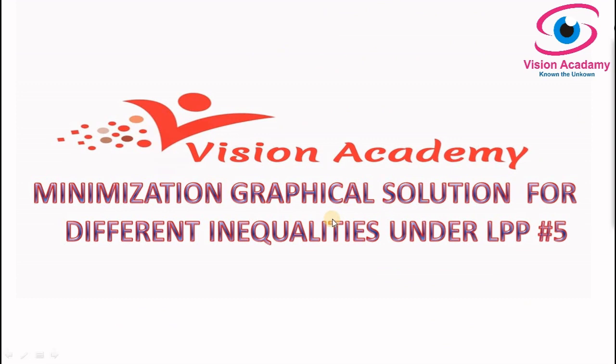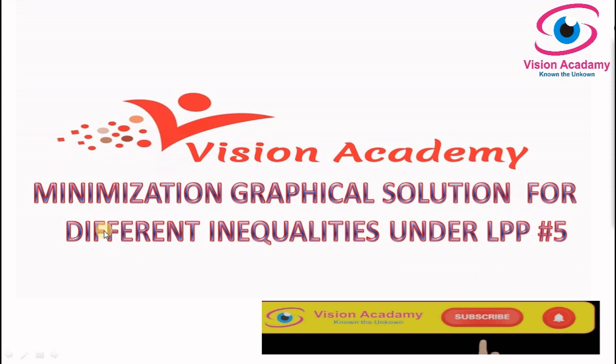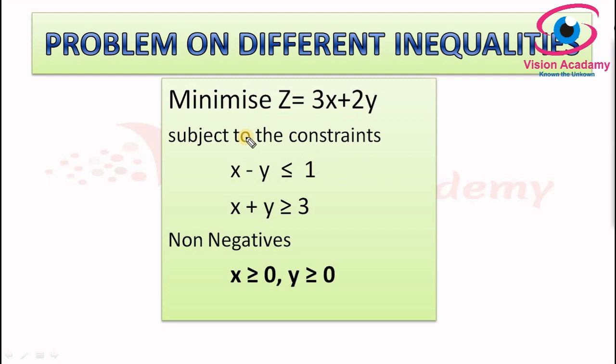In this lecture we will learn how to treat different inequalities in graphical solution — specifically a minimization type of graphical solution of a linear programming problem. We have directly taken a minimization type problem. We will consider different inequality types: one constraint is lesser than type and another constraint is greater than type. We will discuss how to address this and draw the diagram in graphical solution. We have Z minimization: 3x plus 4y.